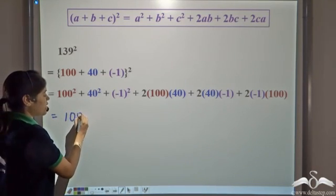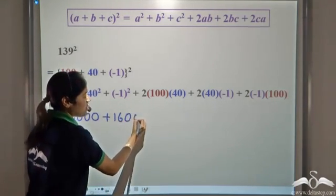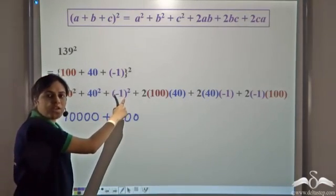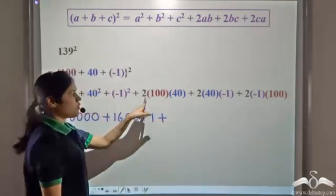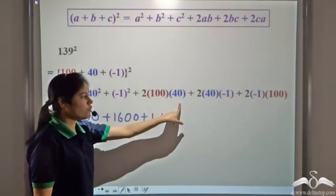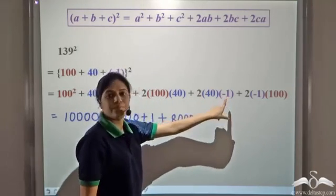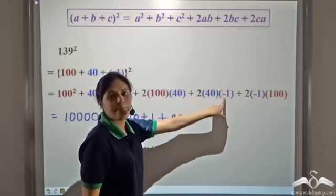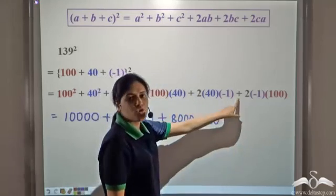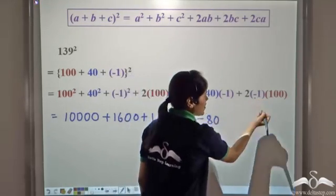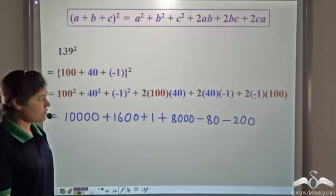Now the rest is quite simple: 100² is 10,000; 40² is 1,600; negative 1 squared is 1. Then 2 times 100 times 40: 2 times 100 is 200, times 40 is 8,000. 2 times 40 times negative 1 gives us negative 80. And 2 times negative 1 times 100 gives us negative 200.